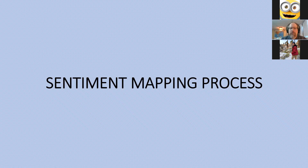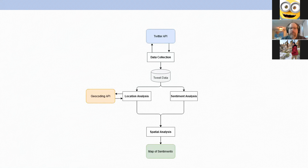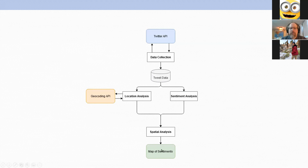For the majority of this presentation I'll take you through my sentiment mapping process — a combination of methods and results discussed together. A key theme is the mix of automated processes with manual validation and correction. My methods are divided into four sections: data collection, location analysis, sentiment analysis, and spatial analysis, which combines the location and sentiment. The general trend is taking data from Twitter, running these analyses, and outputting a map of sentiments.